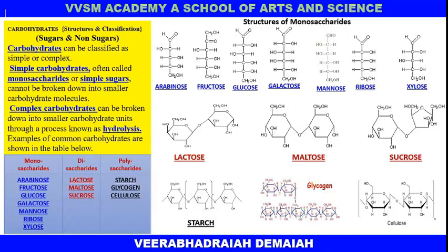Polysaccharides are complex carbohydrates that can be broken down into smaller carbohydrate units through the process of hydrolysis. Examples of polysaccharides are starch, glycogen, and cellulose.